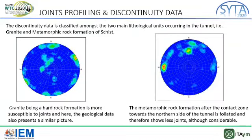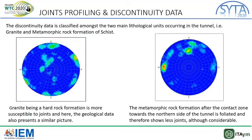Now we will talk about joint profiling and the discontinuity data. We have different discontinuity data for the two lithological units in the tunnel. On the left, we have data for the gneiss — it is more susceptible to joints and the geological data presents a similar picture. On the right, we have the metamorphic rock formation joint data, which shows fewer joints than the gneiss, but still a considerable number in this lithological unit.